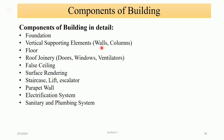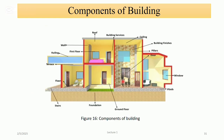The superstructure refers to structures which are above the ground level, and consists of floors, roof, doors, windows, walls, etc. In detail, the components of buildings include: foundation, vertical supporting elements such as walls and columns, floors, roof, joinery — which includes doors, windows, and ventilators — false ceilings, surface rendering, staircase, lift, escalator, parapet wall, electrification system, and sanitary and plumbing system. You can see in the figure different components of a building such as foundation, roof, walls, doors, windows, filler, and building finishes.